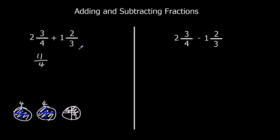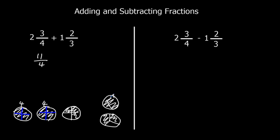Here I've got 1 and 2 thirds. So I've got 1 whole one and 2 thirds. The whole one is cut into thirds, so I've got 1 times 3 — that's 3 — plus 2, which is 5. So that gives me 5 thirds.